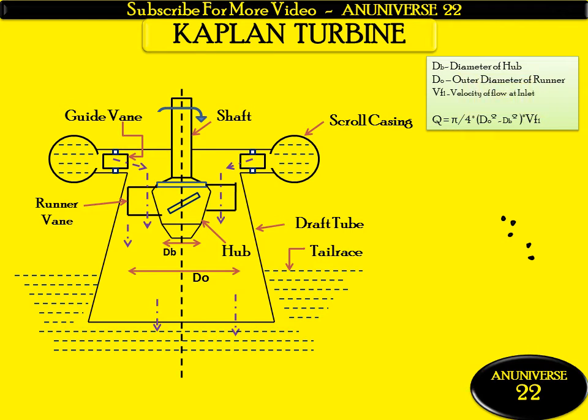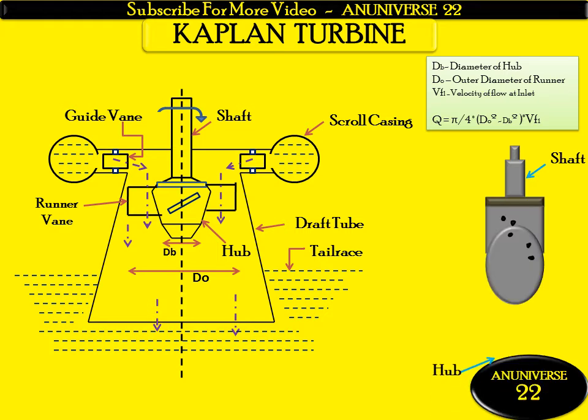Here D_b is the diameter of the hub and D_o is the outer diameter of the runner. V_f1 is the velocity of flow at inlet. The discharge is given by: Q = (π/4)(D_o² − D_b²) × V_f1. This is the diagram showing the shaft, hub, and adjustable vanes on it — a nice view of the hub, which is also known as a boss.